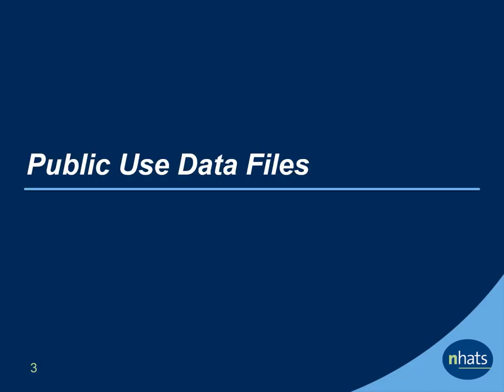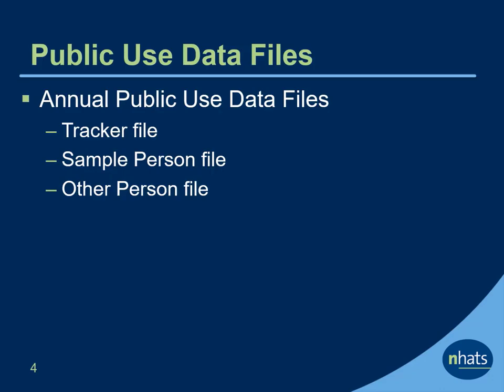Let's start with information about the NHATS public use data files. NHATS organizes files each round into three main public use data files: the tracker file, the sample person or SP file, and the other person or OP file. Let's review each of the annual data files in more detail.